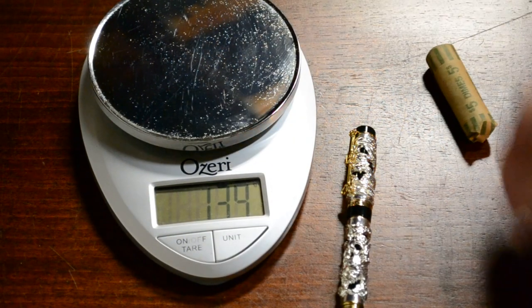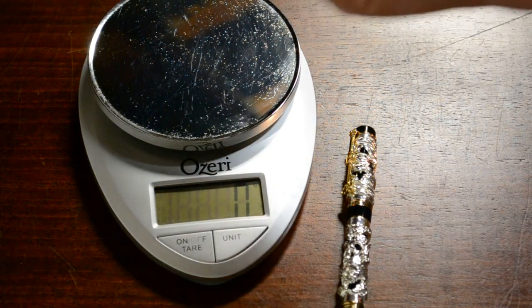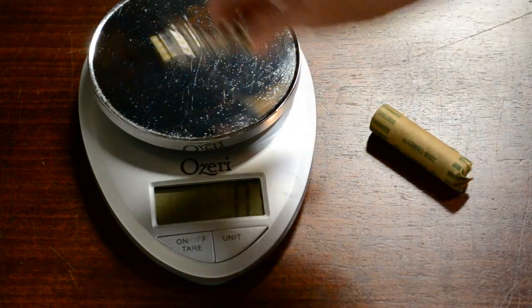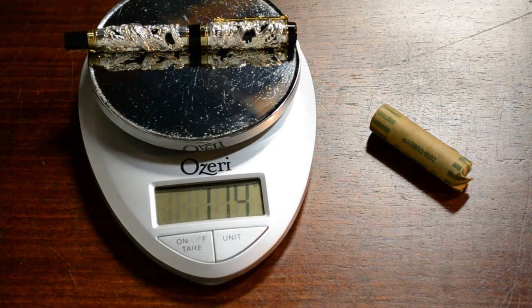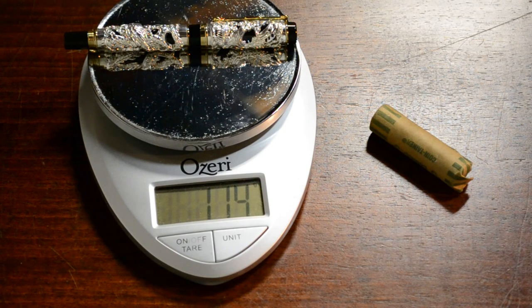So we're going to take off the roll of dimes, which is quite heavy. We're going to weigh this Jin Hao Chinese Dragon fountain pen. 114 grams, people. This thing weighs more than an entire roll of dimes. This is not a fountain pen. This is a weapon.